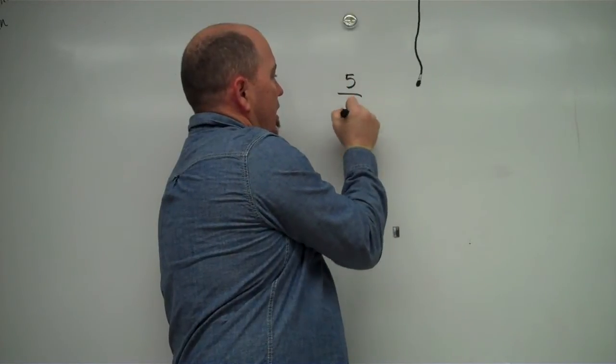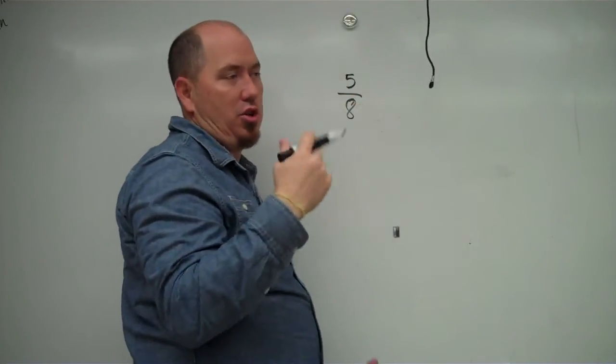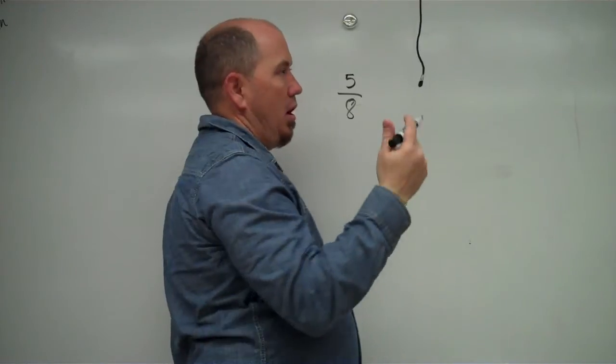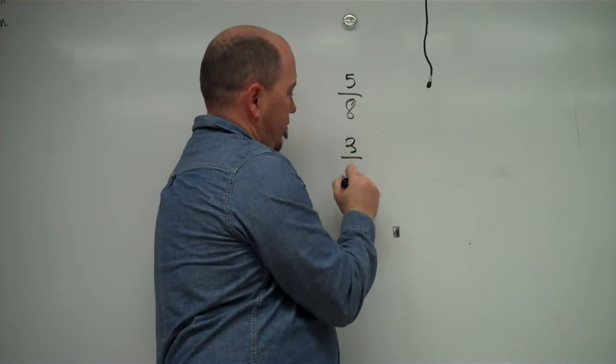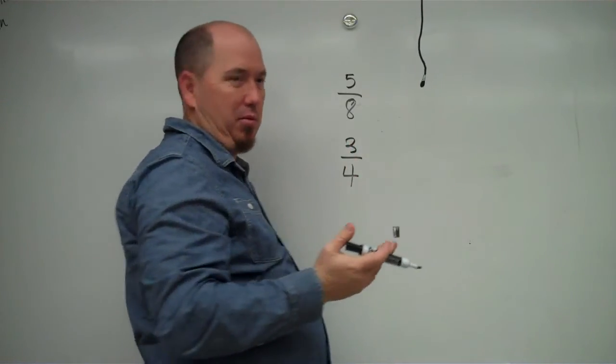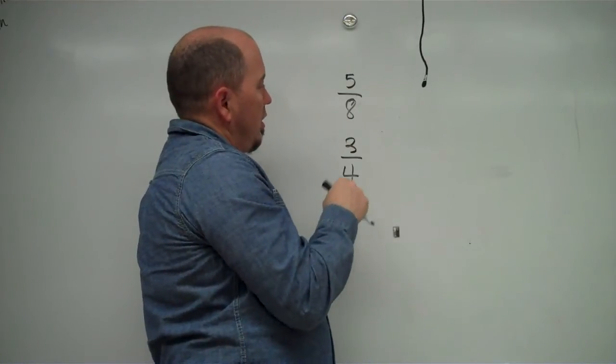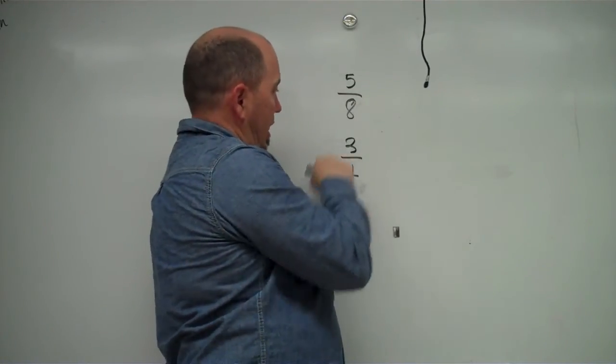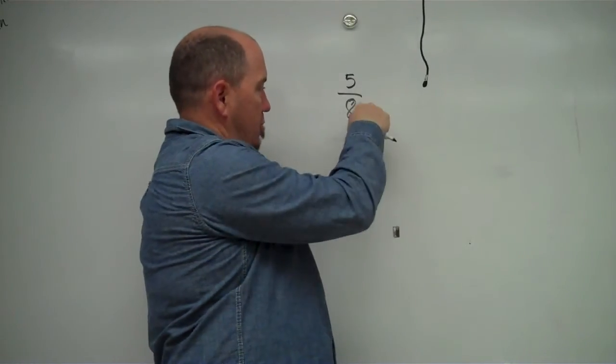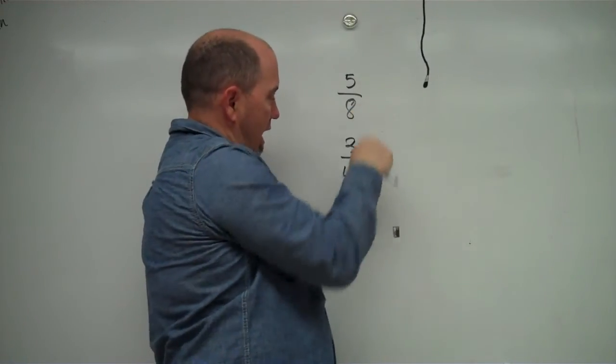So let's take some randoms. Like 5 eighths. Is 5 eighths larger or smaller than 3 fourths? I like 3 fourths. I don't want to keep going back to it. Okay. So I'm going to compare those two numbers. Well, can I multiply, how do I get to an 8? Can I bring this 5 or this 8 down to a 4?